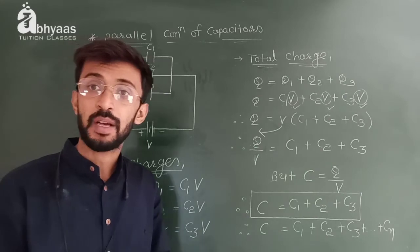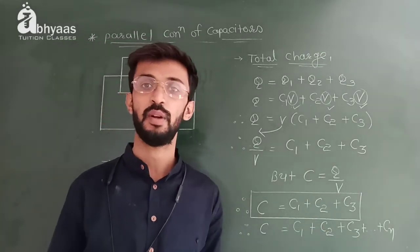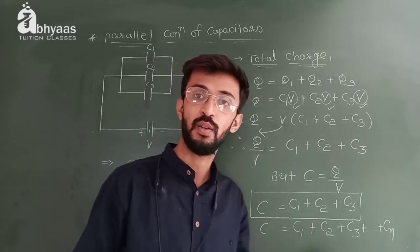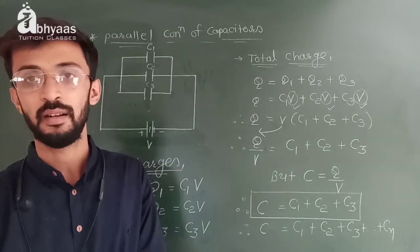If we have n capacitors available, C is given by C1 plus C2 plus C3 plus dot dot dot plus Cn. Thank you.